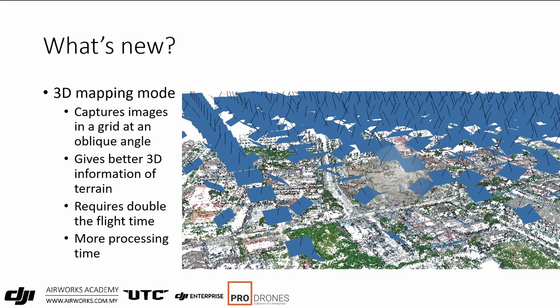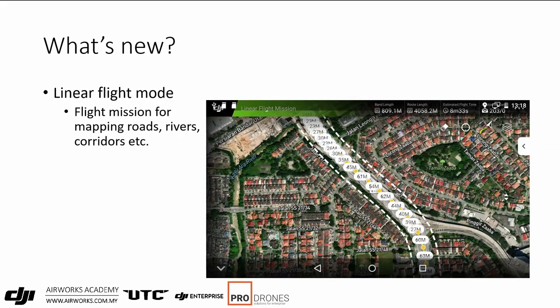3D mapping mode sets the camera at 45 degrees or any oblique angle and flies in a criss-cross pattern. This doubles the flight time over a particular area and increases the number of pictures — requiring more processing — but gives you more accurate terrain information. Linear flight mode is for mapping roads, rivers, and powerline corridors, so you fly along a long line instead of mapping in small squares.